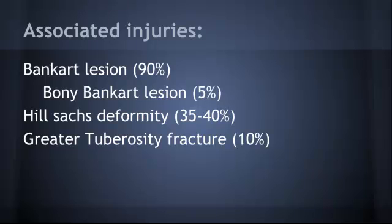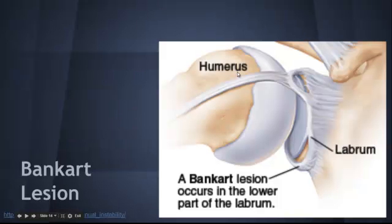The injuries associated with a shoulder dislocation are: Bankart lesion in up to 90%, bony Bankart lesion in around 5%, Hill-Sachs deformity in around 35–40%, and greater tuberosity fractures in about 10%. It's fairly common that you'll have some kind of disruption of the shoulder joint, whether it's a fracture or one of the Bankart lesions.